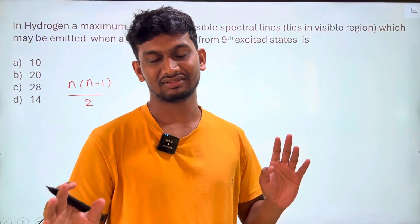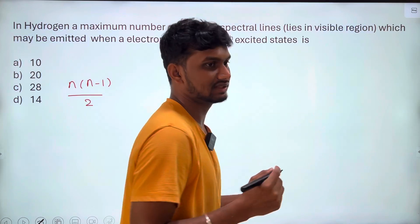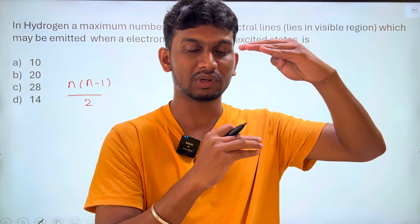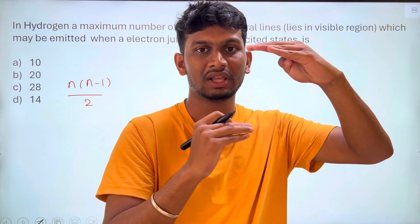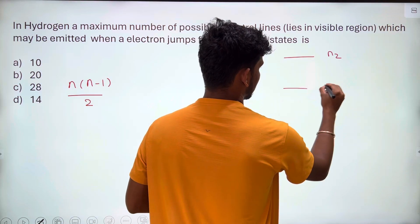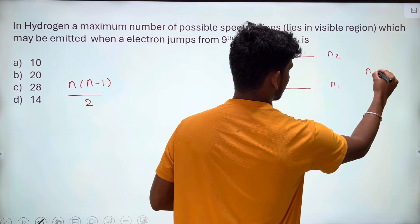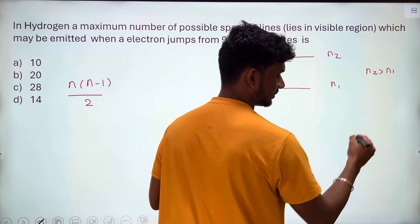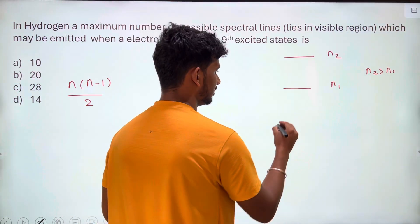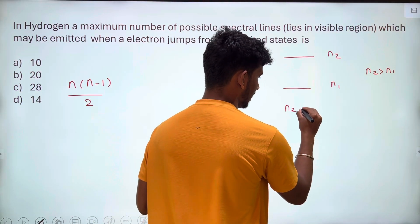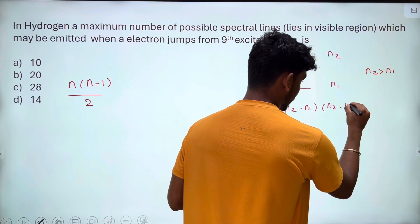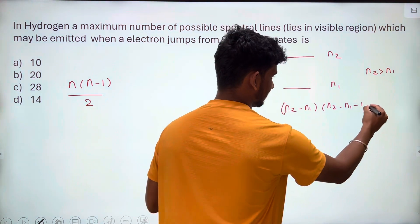But now, towards the end of the video, the total number of possible spectral lines is when an electron jumps from n2 state to n1. If n1 is ground state, n2 will jump to n1. n2 is greater than n1. That's why we have spectral lines. So in this case, total number of possible spectral lines, possible ways, is n2 minus n1 by 2.